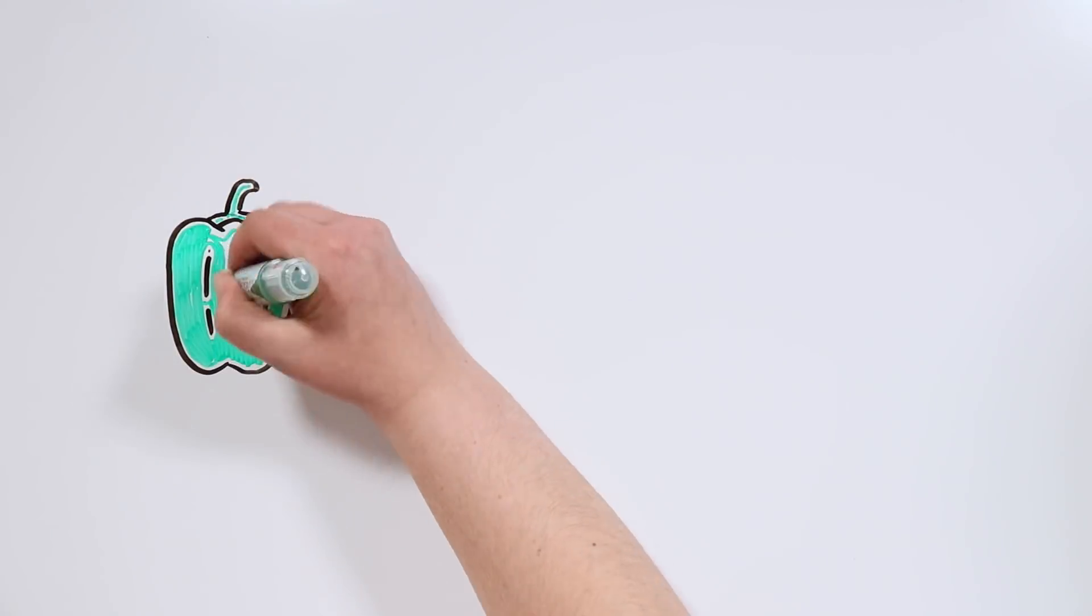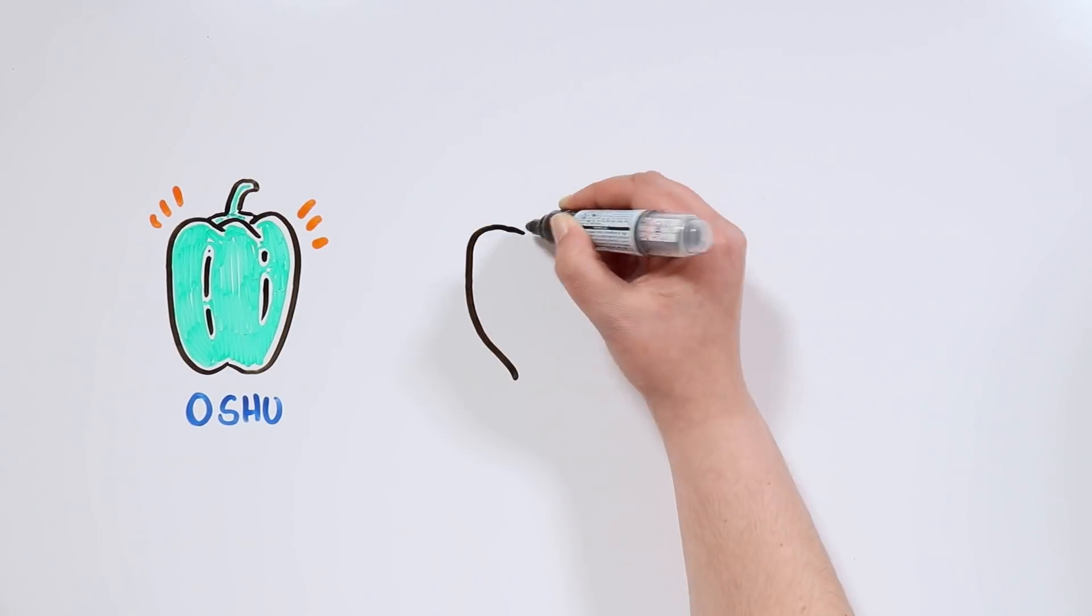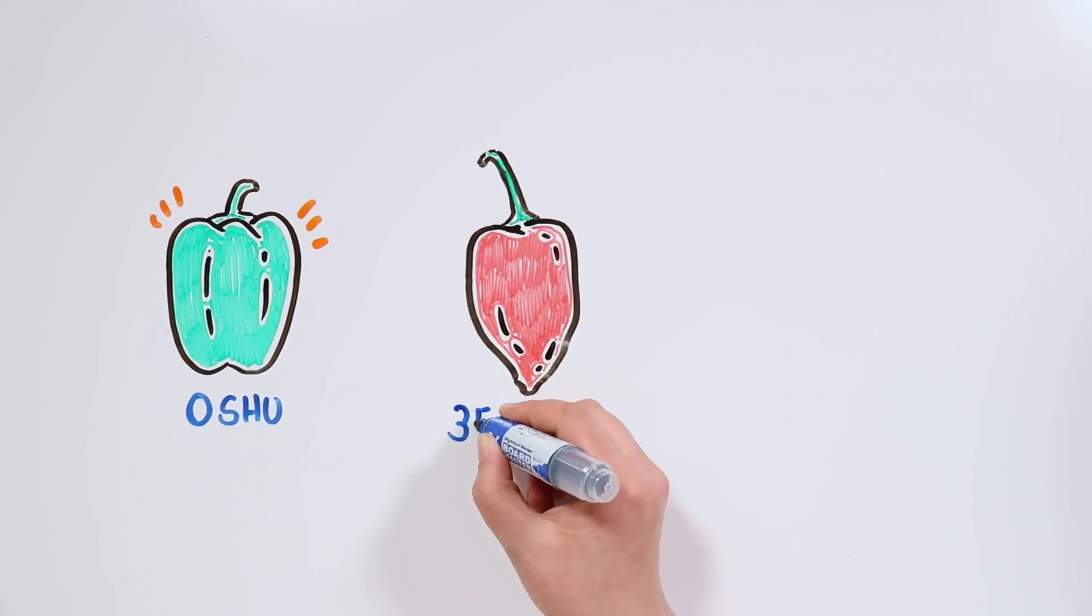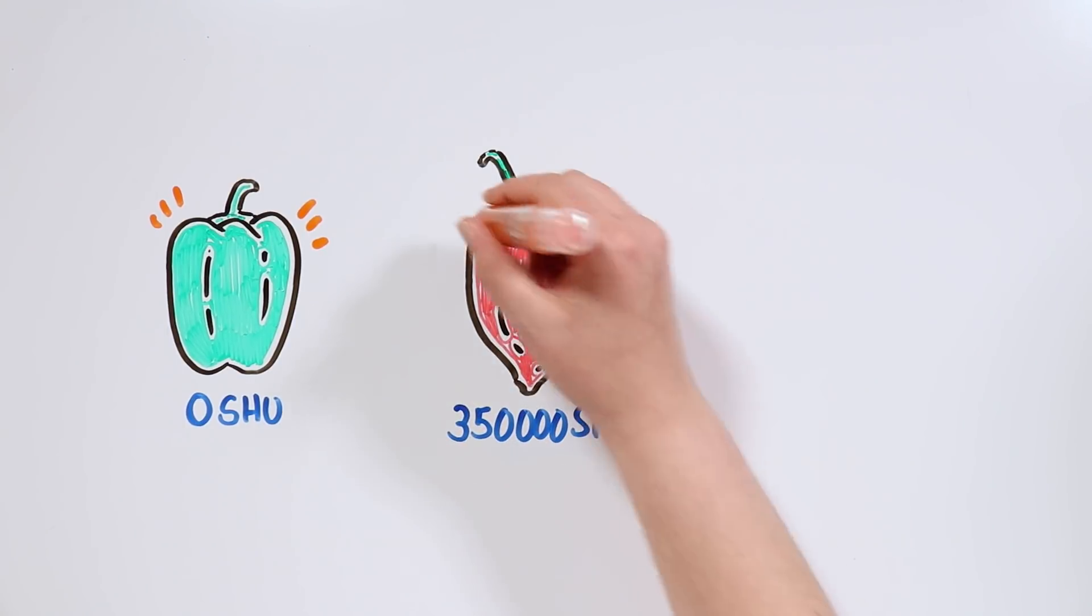In this scale, the green pepper has zero units, and the most spicy pepper in all of Mexico, the habanero, has up to 350,000 units.